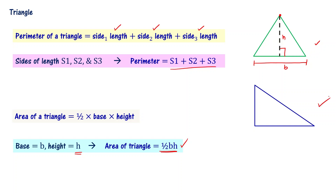What about this particular triangle? Area is also half base times height. Let me call this as base B1 for this particular triangle. What is the height? This particular baseline — I have to draw a perpendicular line. This is going to be the height; let me call this as H1. So area of this particular triangle is going to be half B1 times H1.